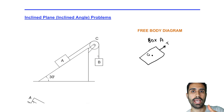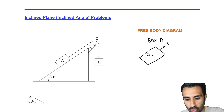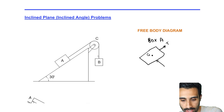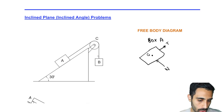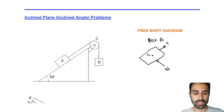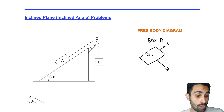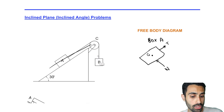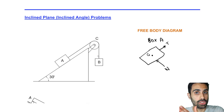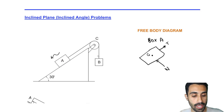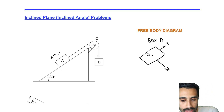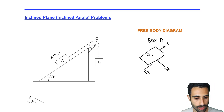The block contacts the incline, so the incline applies an equal and opposite reaction — that's our normal force, which is always perpendicular to the surface. We also have friction. Assuming static equilibrium and that the impending motion of block A is down the incline, the force of friction acts up the incline, always opposing the direction of motion.